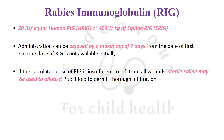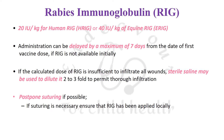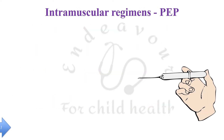If the calculated dose of rabies immunoglobulin is insufficient to infiltrate all wounds, it can be diluted with sterile saline and infiltration should still be done around the wounds. Postpone suturing if possible; if suturing is necessary, ensure that rabies immunoglobulin has been applied locally first.